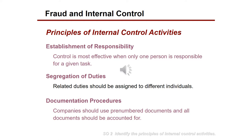With segregation of duties, the workflow should pass through multiple individuals in the organization, and each one must verify what was done by the employee before them. The third principle is documentation procedures — companies should use pre-numbered documents and all documents should be accounted for. For example, receipts in corporations typically have serial numbers. Even at a restaurant, your receipt will always have a serial order number on it.